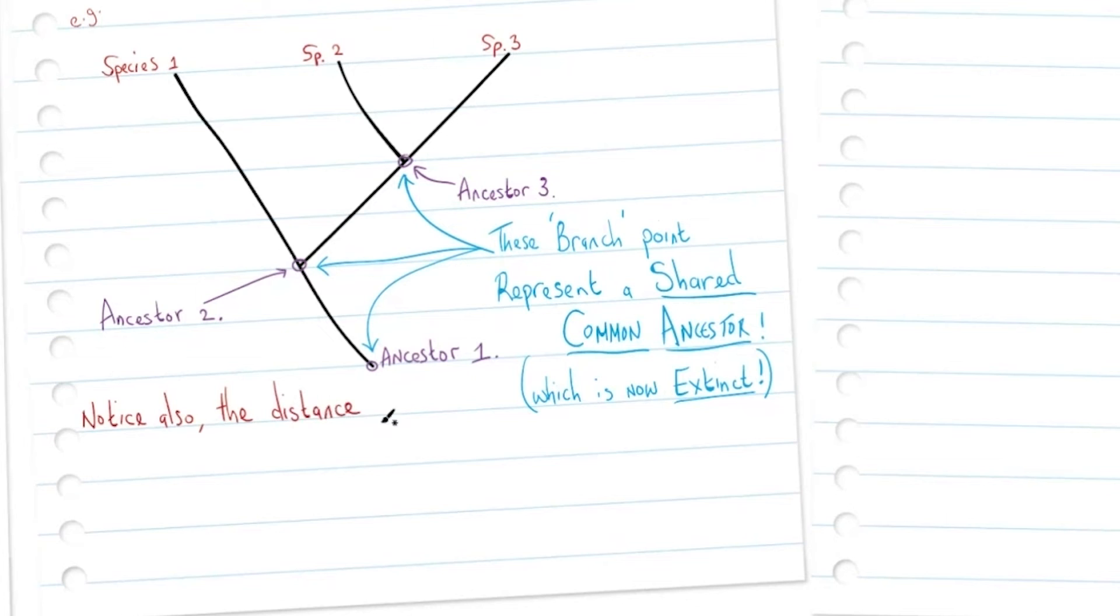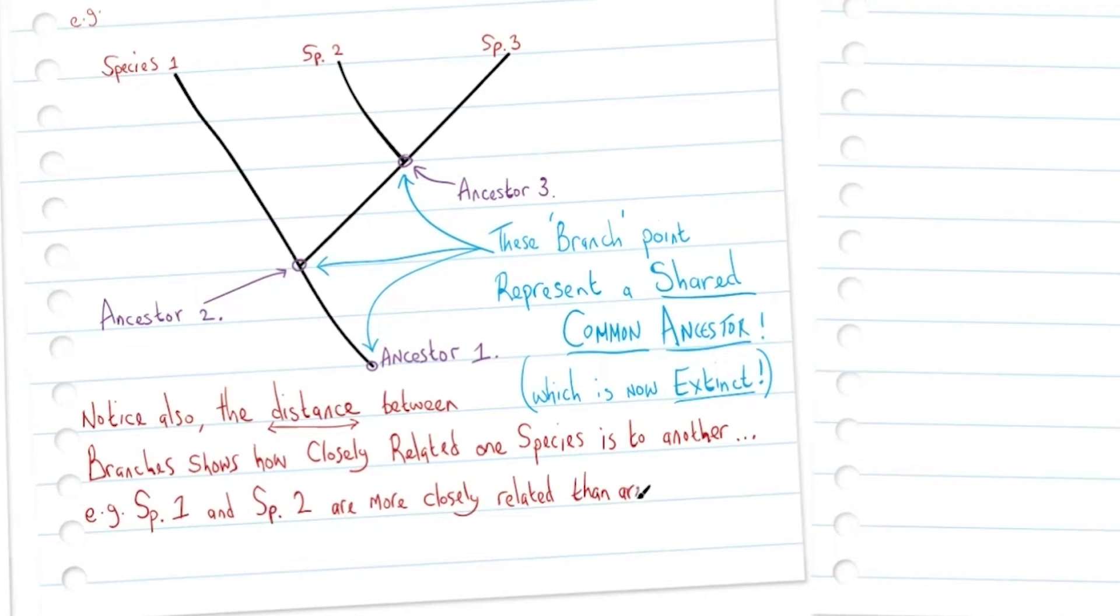Notice also that the distance between branches shows how closely related one species is to another. For example, species 1 and species 2 are more closely related than species 1 and species 3, as we can see here indicated by the red arrows between the species.